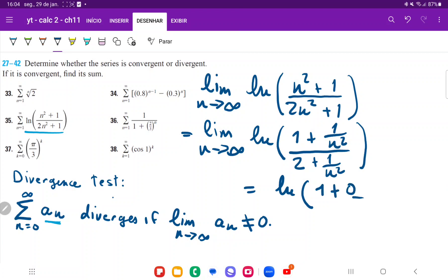So that's going to be 1 plus 0 divided by 2 plus 1 divided by infinity, which is 0. So 2 plus 0, which is the same thing as ln of 1 half.